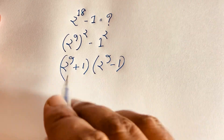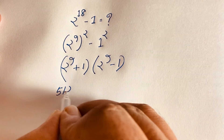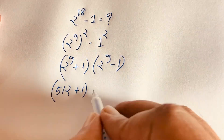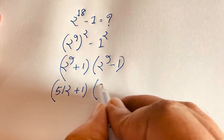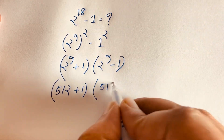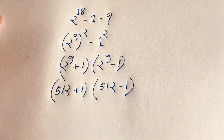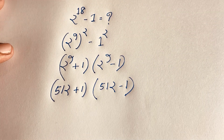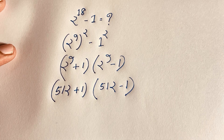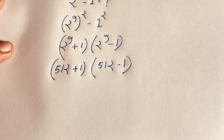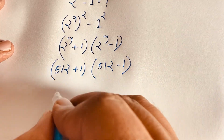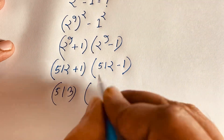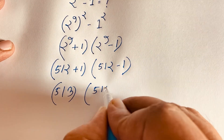Now, 2 to the power 9 equals 512. So it becomes (512 + 1) times (512 - 1), which is 513 times 511.